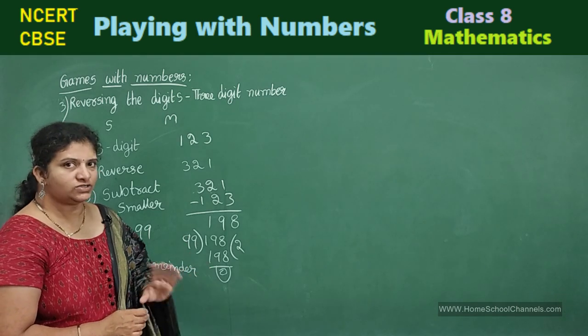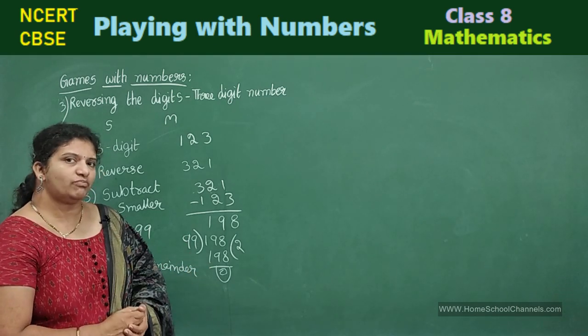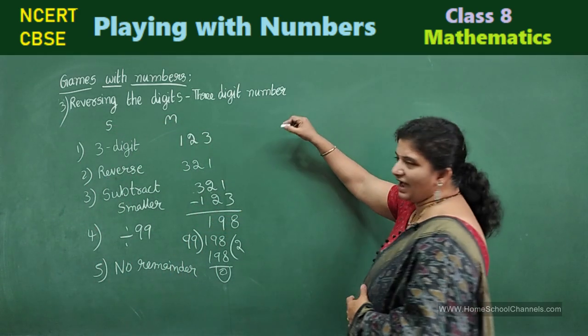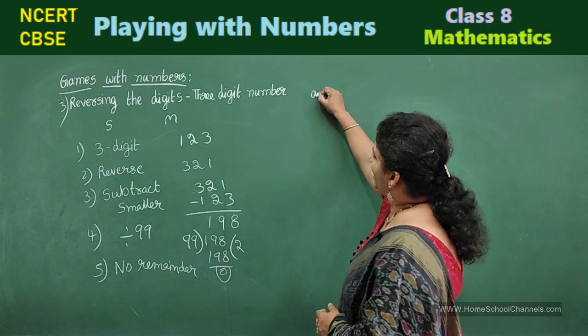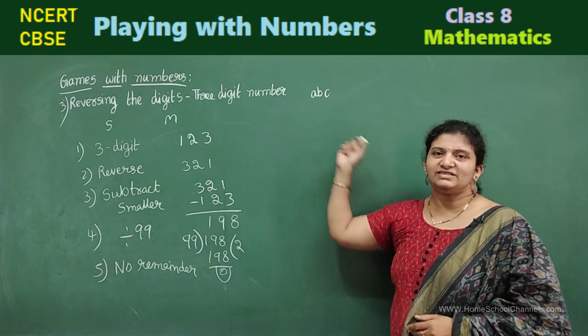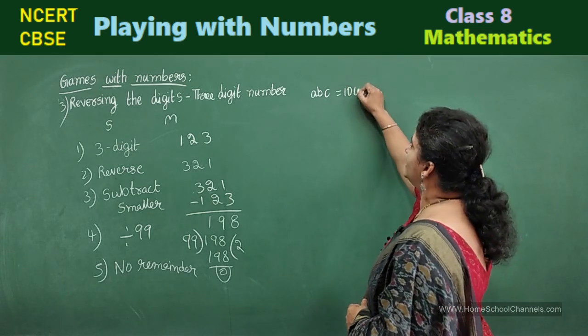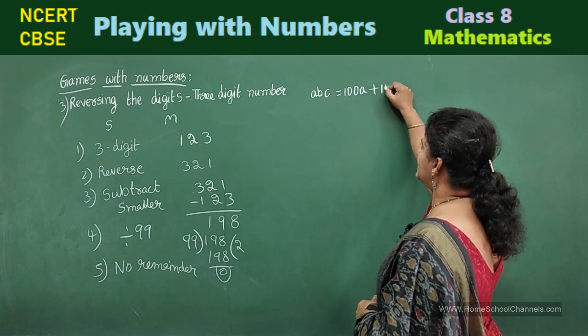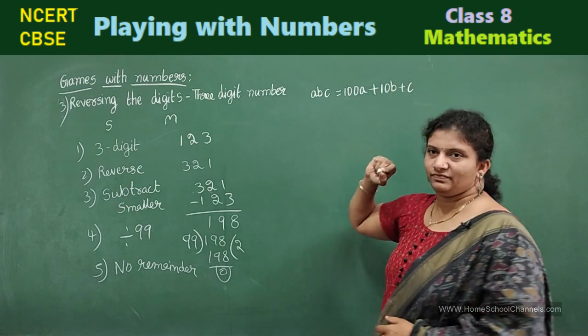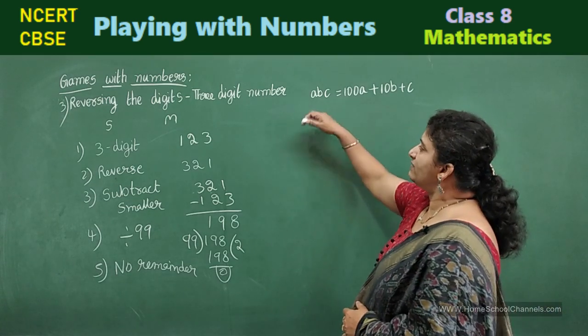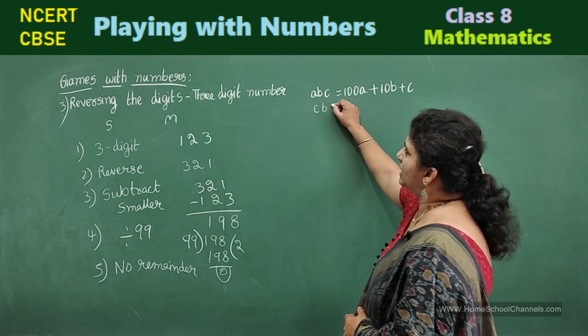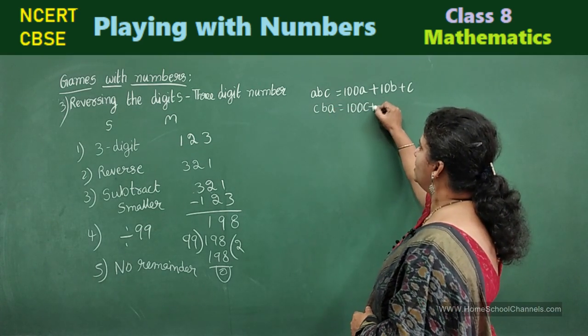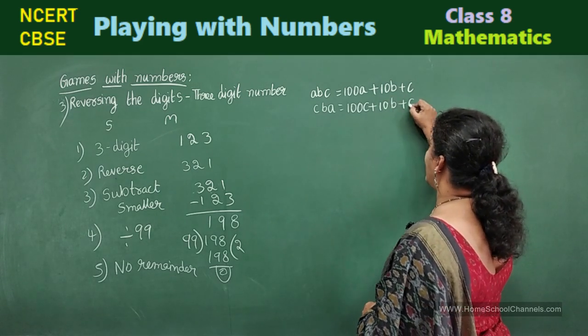Yes, Meenakshi also felt. Oh, how it is possible. How can Sundaram say that there is no remainder? This trick we are going to reveal by taking a three digit number as A, B, C. Write this in general form. 100A. A is in hundreds place. 100A plus 10B plus C. Now reverse the digits. C, B, A. Write this in general form. 100C plus 10B plus A.